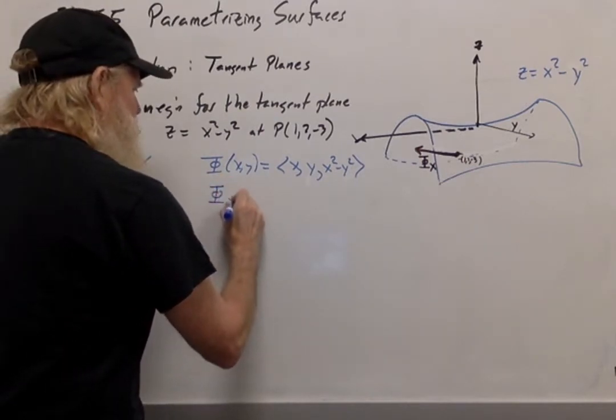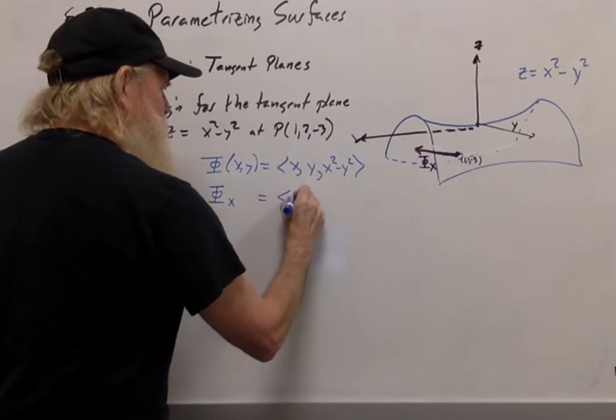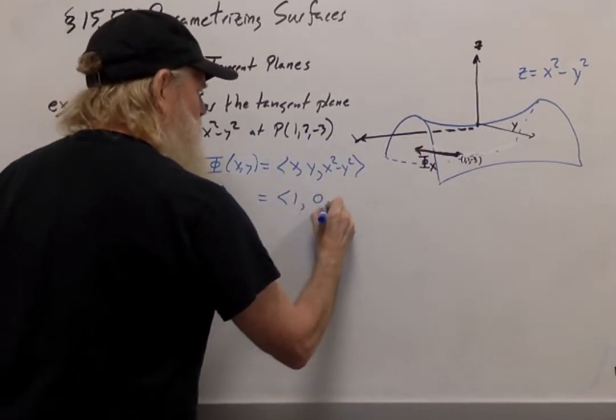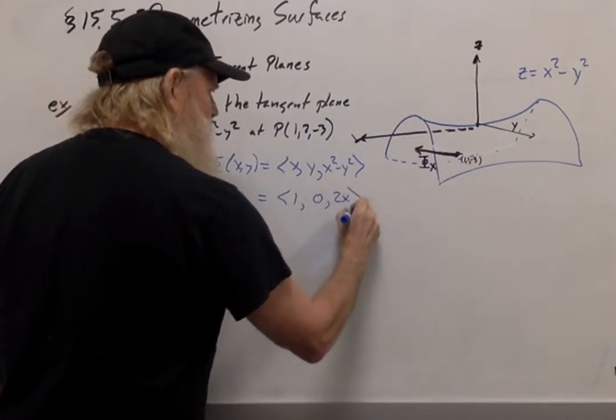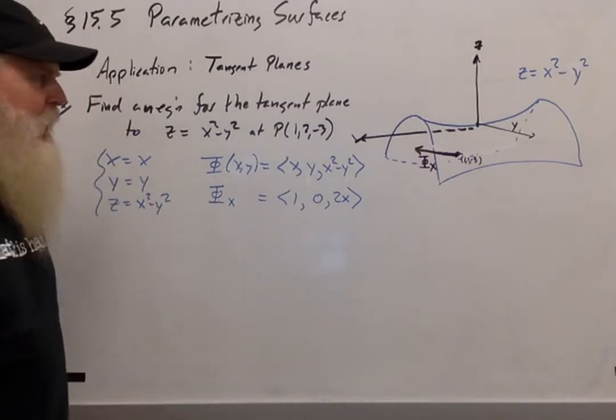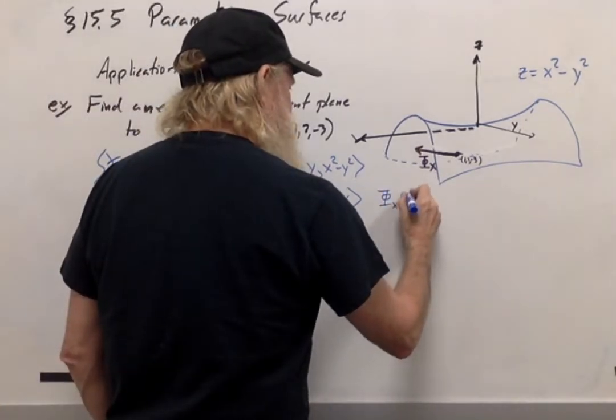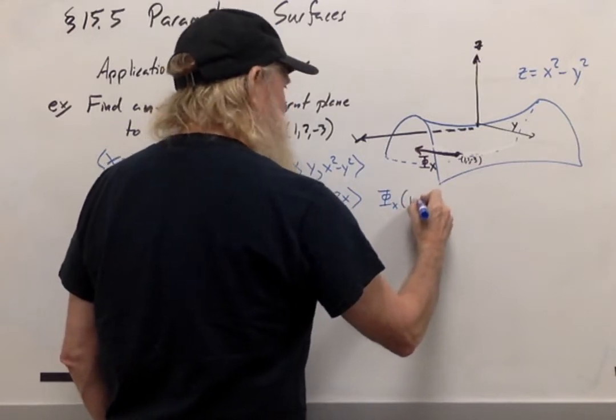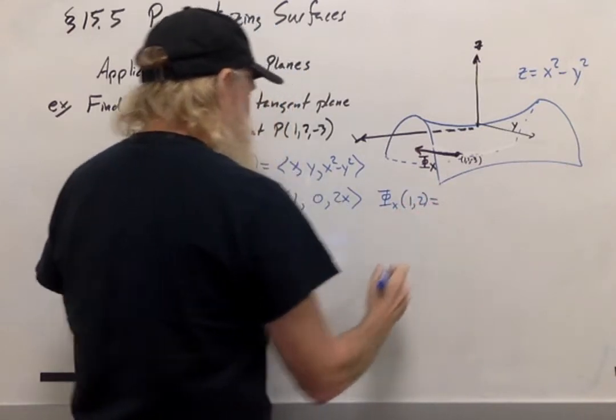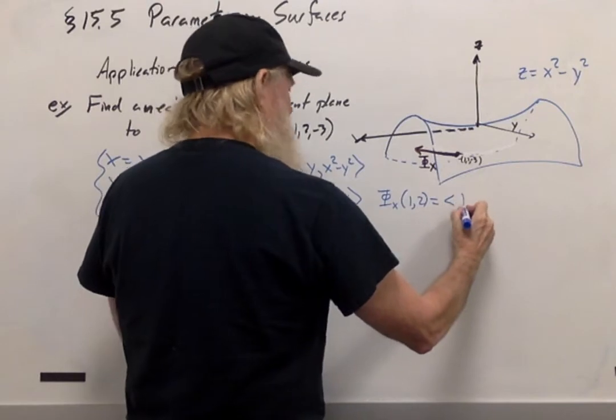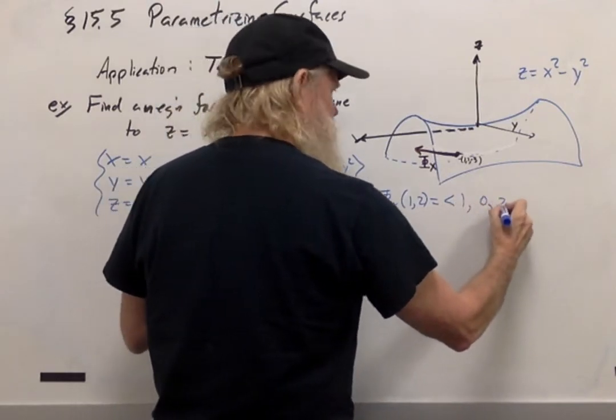The derivative of phi with respect to x is (1, 0, 2x). So in particular, d phi dx when x is 1 and y is 2 is going to equal (1, 0, 2).